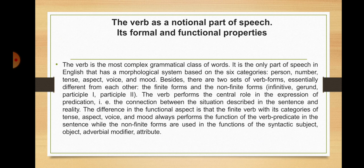The verb is the most complex grammatical class of words. It is the only part of speech in English that has a morphological system based on six categories — person, number, tense, aspect, voice, and mood. Besides, there are two sets of verb forms essentially different from each other: the finite forms and the non-finite forms — infinitive, gerund, and two participles. The verb performs the central role in the expression of predication, that is, the connection between the situation described in the sentence and reality. The finite verb always performs the function of the verb predicate, while non-finite forms are used as syntactic subject, object, adverbial modifier, or attribute.